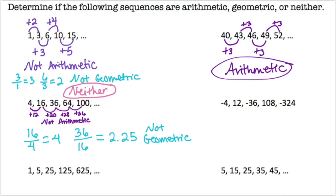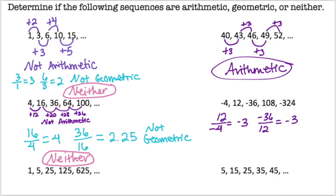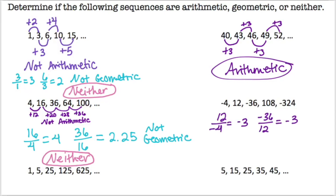For number four, we don't even need to check adding because the numbers alternate negative, positive, negative, positive — so it must be multiplying by a negative number. Taking 12 divided by negative 4 gives negative 3, and negative 36 divided by 12 also gives negative 3, so that means it's a geometric sequence with a common ratio of negative 3.